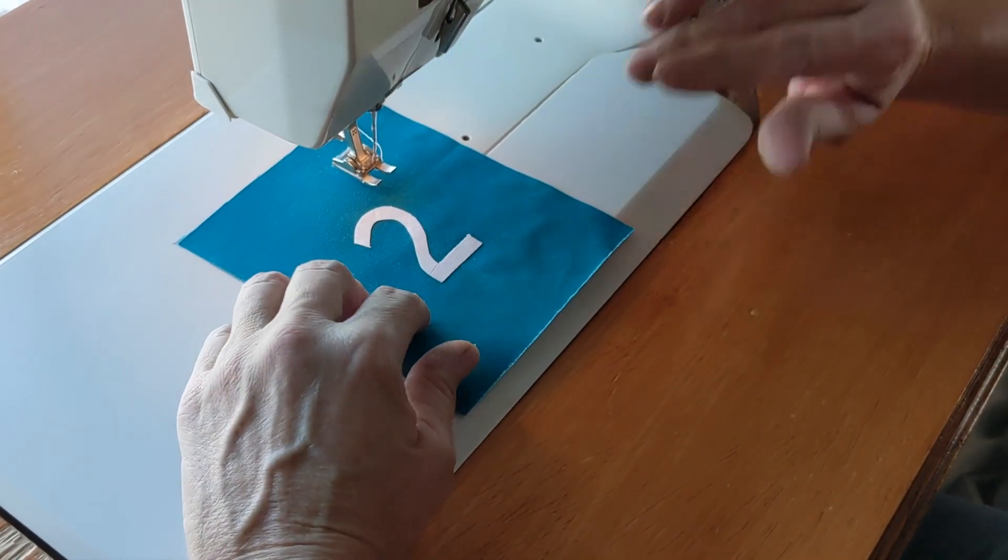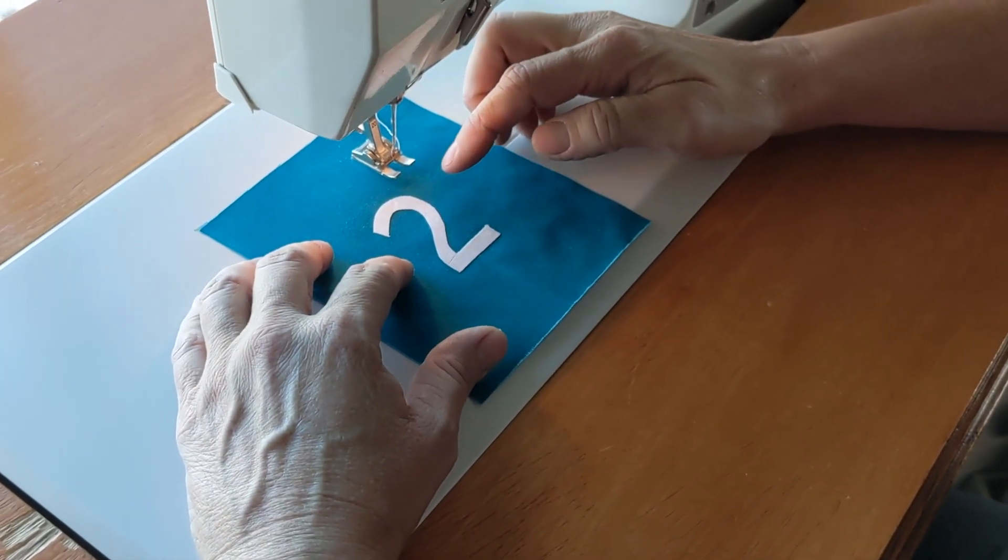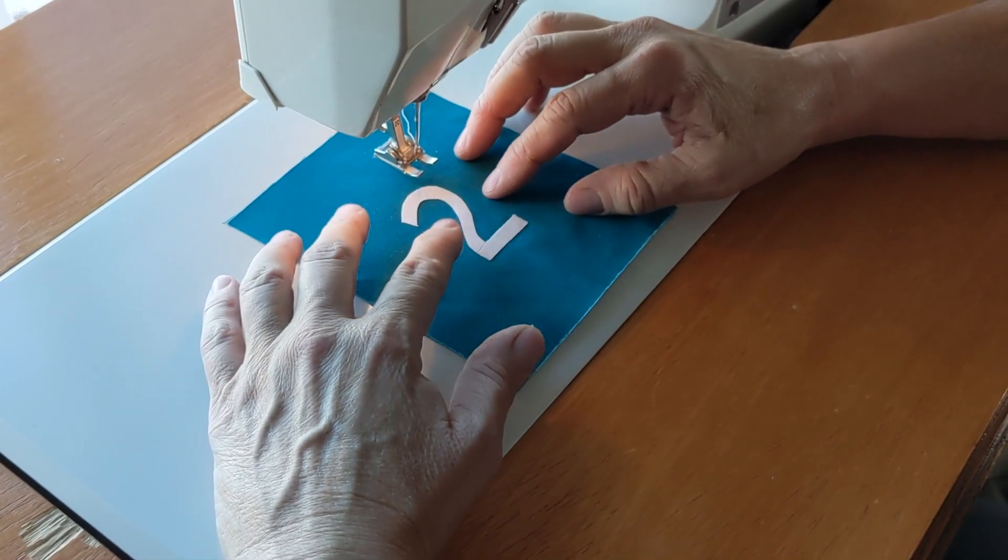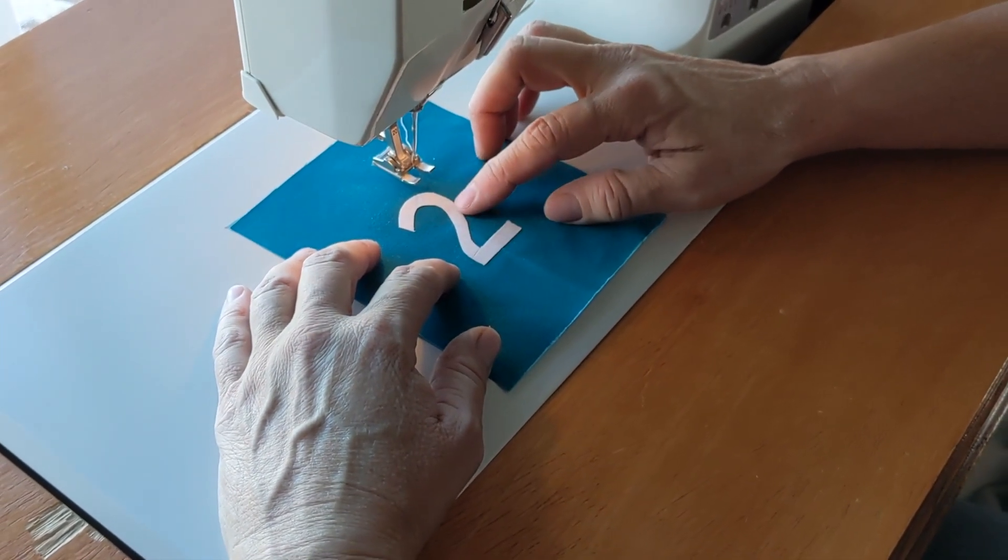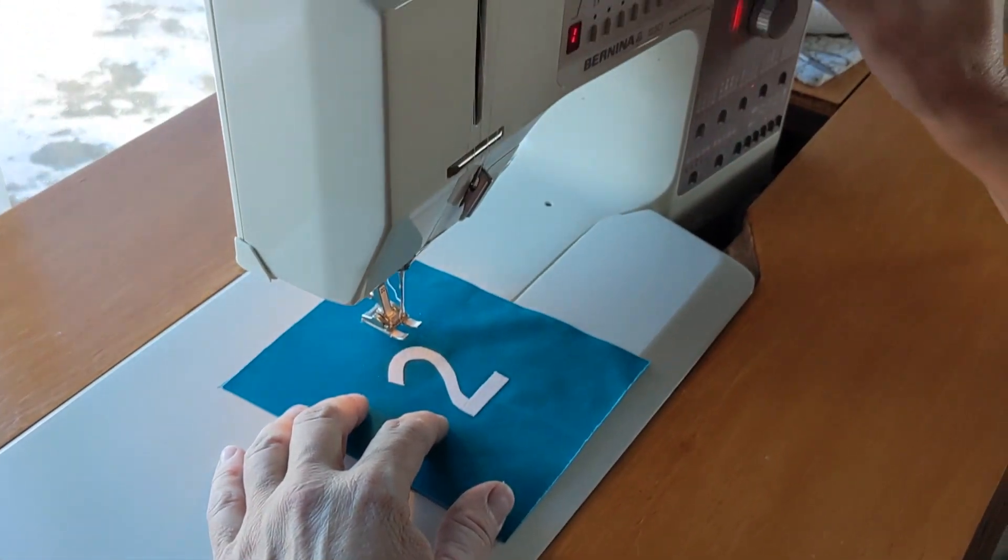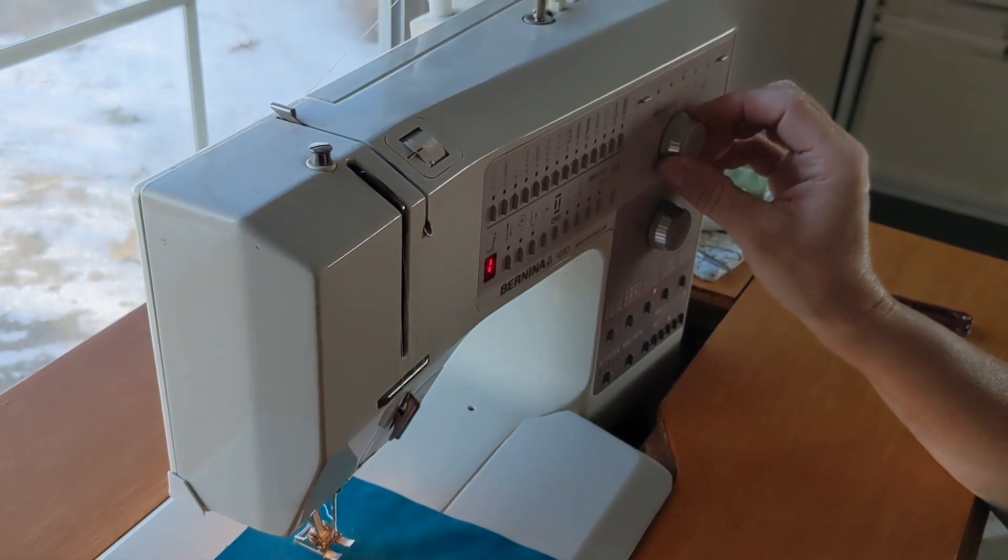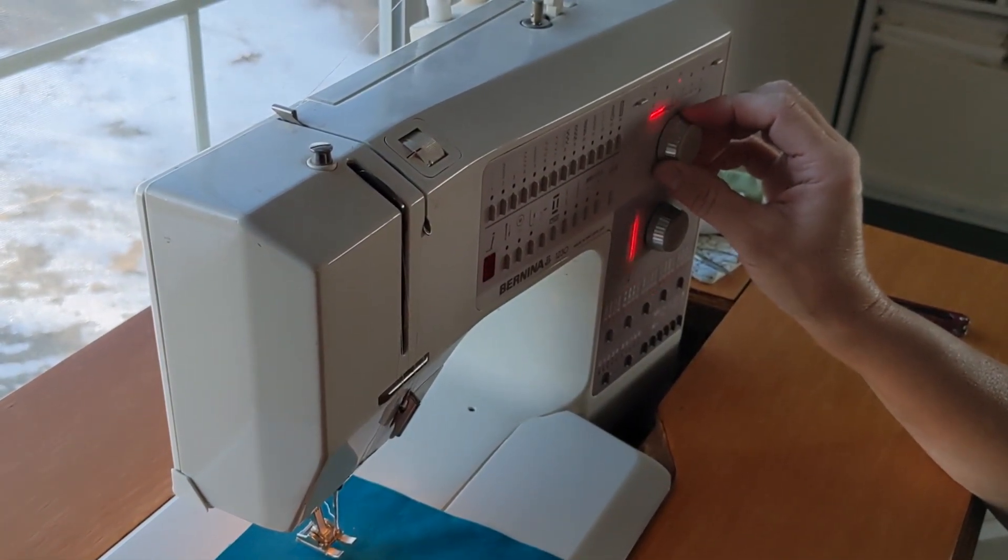And by default, that stitch is going to be quite wide and quite far apart, and that's great for a lot of things, but on a tiny piece like this, it's really not good. So you're going to want to make some adjustments in the length and the width of that stitch.